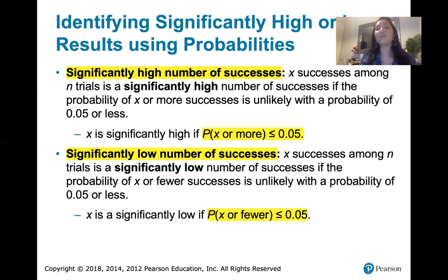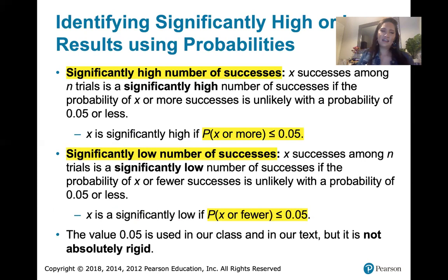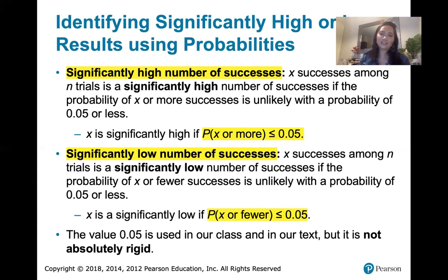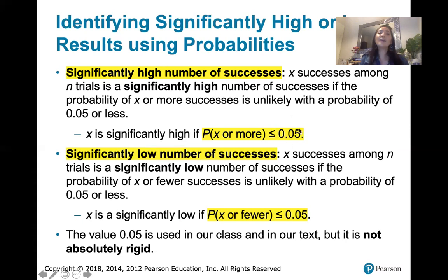That 0.05 — a 5% chance — is just the number we'll use in our textbook and homework. It's a commonly used probability value for indicating something significantly high or significantly low. If you're in the social sciences, you'll use 0.05 a lot. It's not absolutely rigid — you could use 1% or 10% — but 0.05 is what we'll use in our text and class.